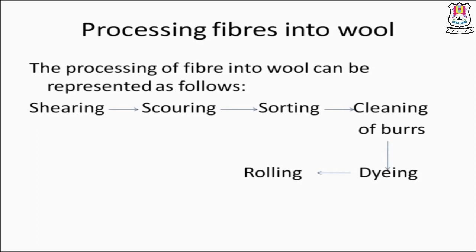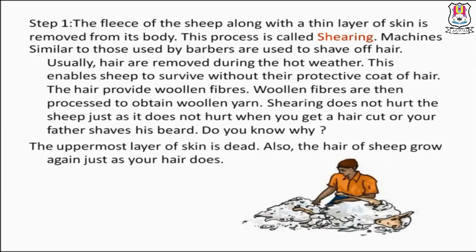Step one: shearing. The fleece of the sheep along with a thin layer of skin is removed from its body — this process is called shearing. Machines similar to those used by barbers are used to shave off the hair. Usually, hair is removed during hot weather, which enables the sheep to survive without their protective coat.